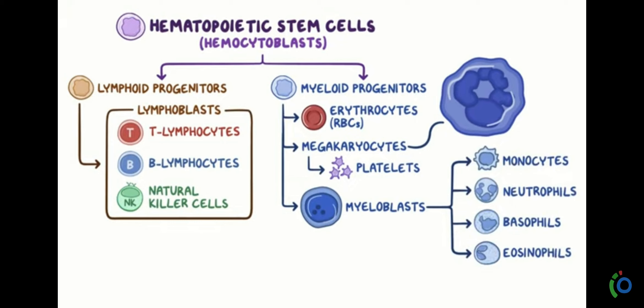Today we discussed lymphoid progenitors and myeloid progenitors. Hematopoietic stem cells divide into two types: myeloid progenitors and lymphoid progenitors. Myeloid progenitors are related to normal human cells responsible for fluid connective tissues or blood, while lymphoid progenitors are especially related to immunity — these lymphoid cells strongly respond to antigens. I hope you liked this video, please like it.